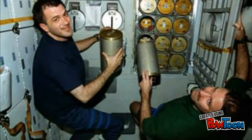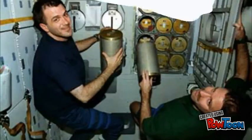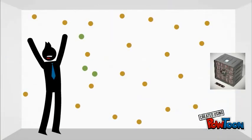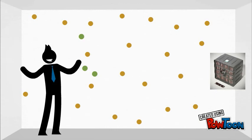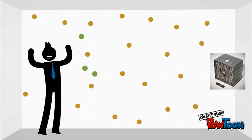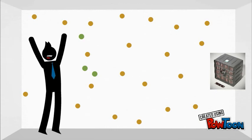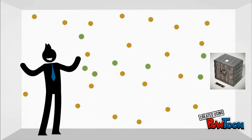Here is a picture of some astronauts replacing the old canisters with new canisters. The old canisters are now filled with lithium carbonate instead of lithium hydroxide. Now, with the lithium hydroxide canisters installed in the closed room, this guy can finally breathe freely.